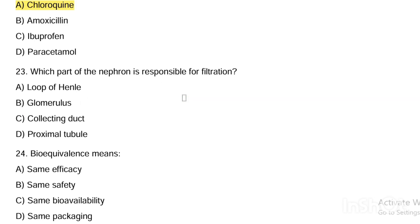Next question. Which part of the nephron is responsible for filtration? Option A, loop of Henle. Option B, glomerulus. Option C, collecting duct. Option D, proximal tubule. Answer is Option B — glomerulus.